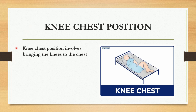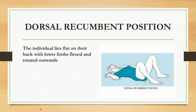Next one is dorsal recumbent position. Here the individual lies flat on their back with lower limbs flexed and rotated outwards. You can see that in the picture.